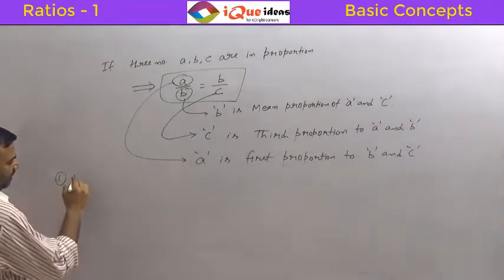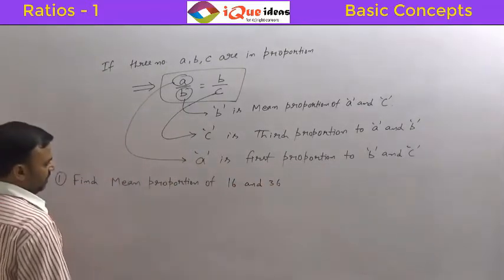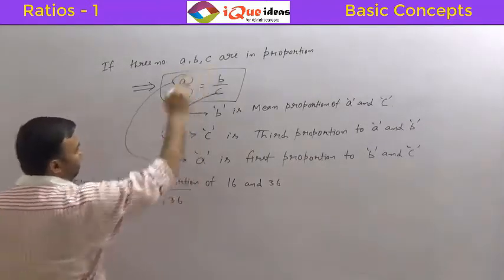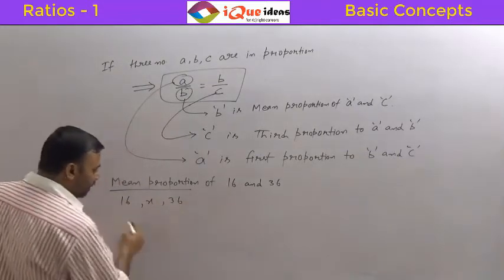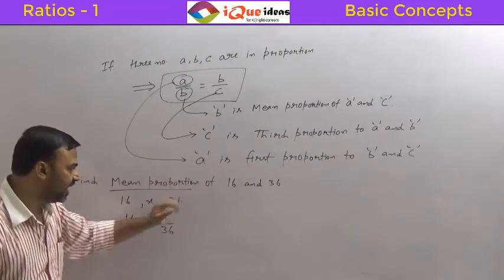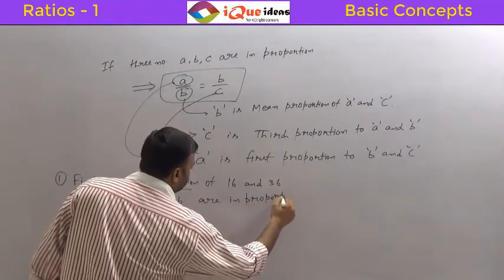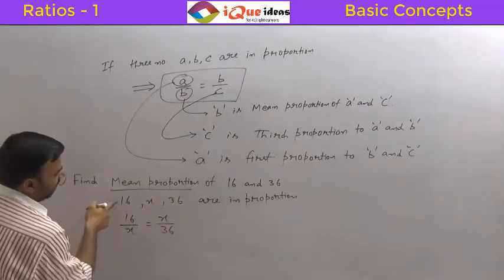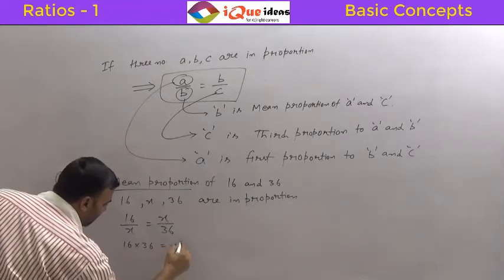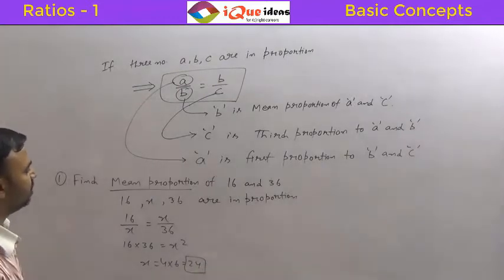Find mean proportion of 16 and 36. We write 16 first, x in the middle, and 36 at the end, assuming x is the mean proportion. So 16, x and 36 are in proportion, giving us 16 upon x equals x upon 36. This gives x squared equals 16 into 36, so x equals 4 into 6, which is 24. So 24 is the mean proportion of 16 and 36.